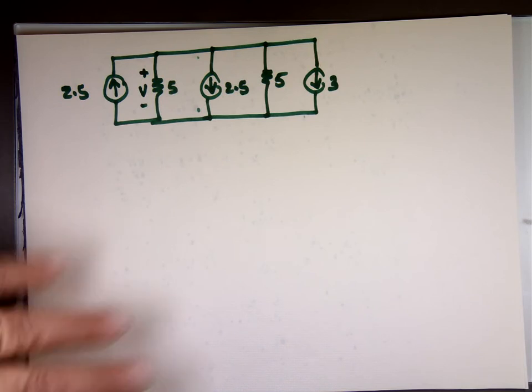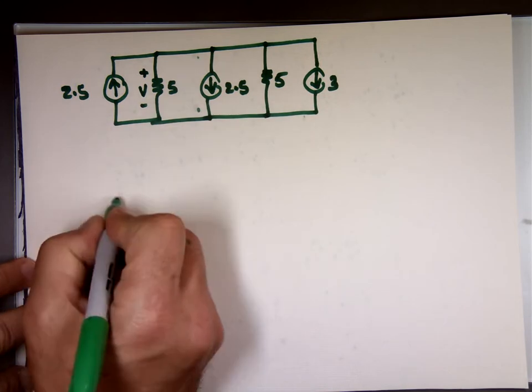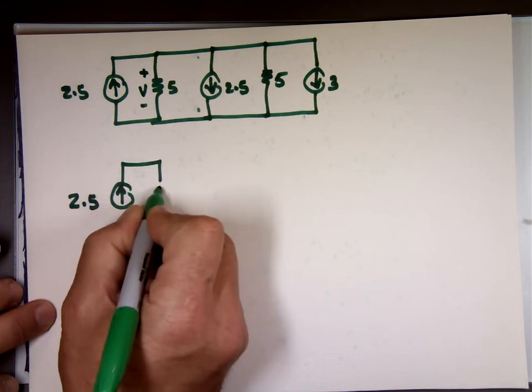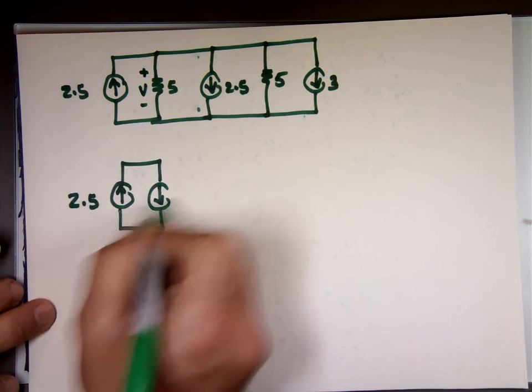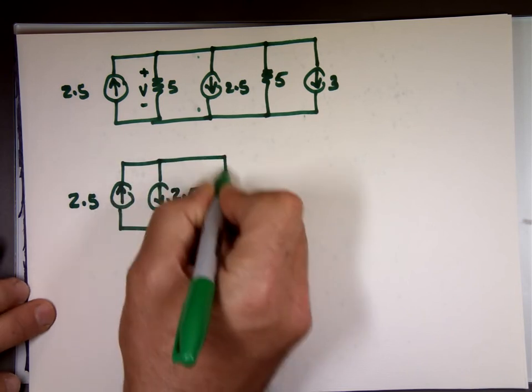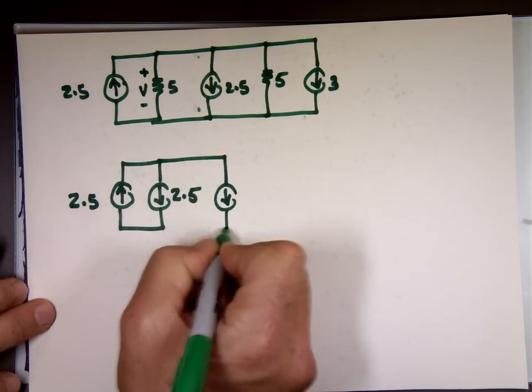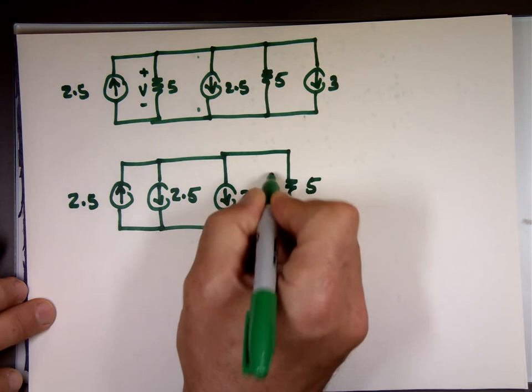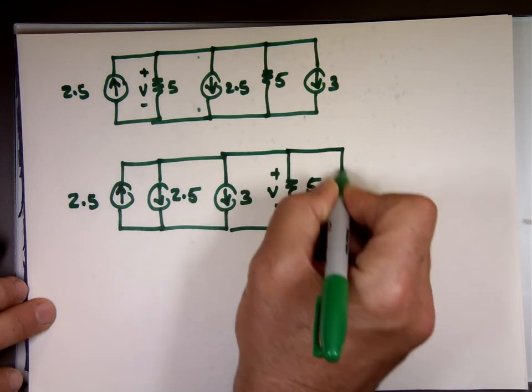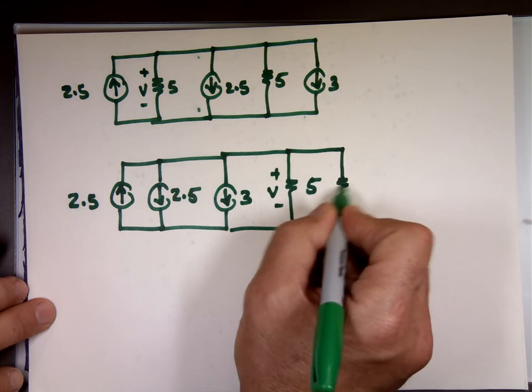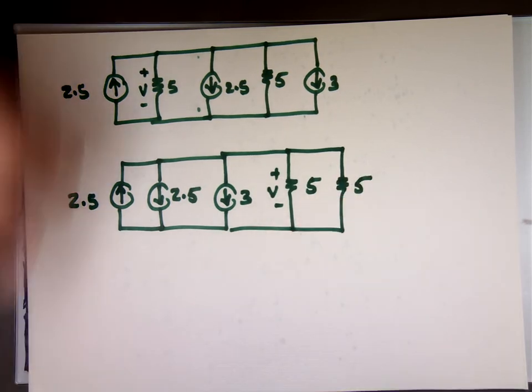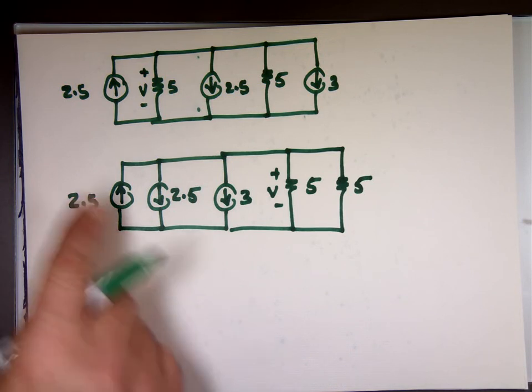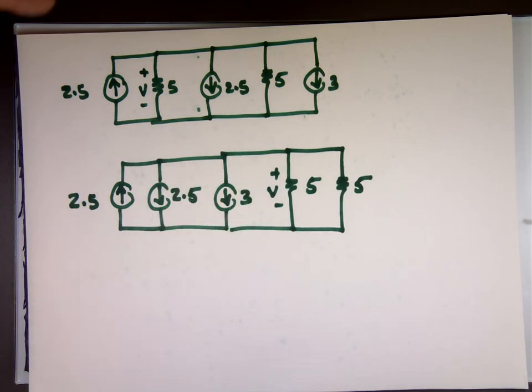Again, just like before, I can flip-flop them. I can move all the sources next to each other. 2.5. Put that 2.5 right next to it. The middle one. Put the 3 down. There's the 5. There's the V. So I decide to put all the sources next to each other. I get 2.5 up, 2.5 down, 3 down. What's in that result? 3 down.